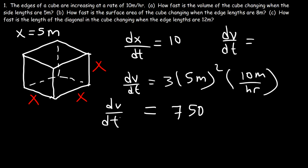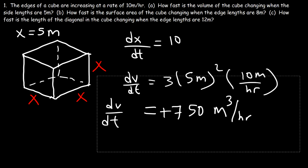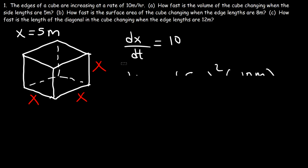What are the units for dv/dt? We have meters squared times meters per hour — meters squared times meters is cubic meters, so it's cubic meters per hour. Since the edges of the cube are increasing, dv/dt is positive. And that's it for Part A — that's how you calculate the rate at which the volume of a cube is changing.